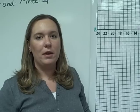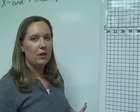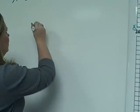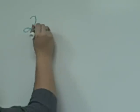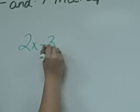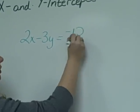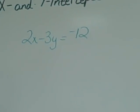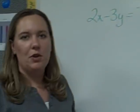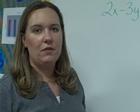X and y-intercepts can also be found from an equation. If we look at the equation 2x minus 3y equals negative 12, if we want to find the x-intercept, we put 0 in place of the y.